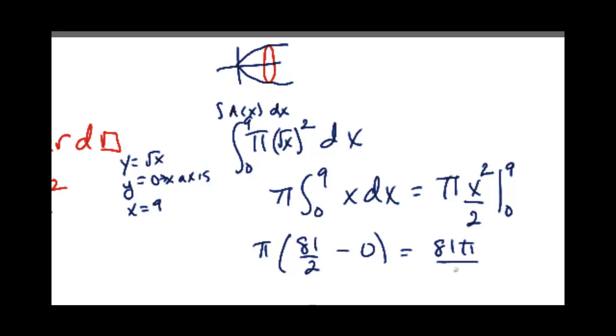So all you do is you square it, the pi comes out the front, integral of x is x squared over 2. Plug in your bounds, and we're going to have pi times 81 over 2 minus 0 over 2, which is 0. So we have 81π over 2.